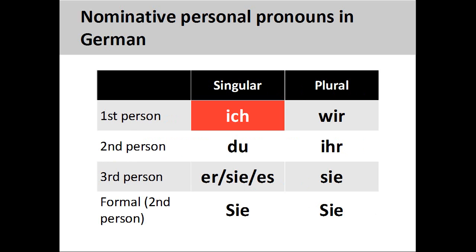The first person to appear on the stage is ich, I — the first person singular personal pronoun. Another actor appears on the stage, whom I would directly address as du, you. This second person singular personal pronoun is the informal form of address that can only be used with deity, family and relatives, close friends, young children, and pets.